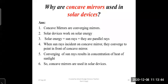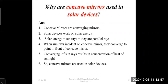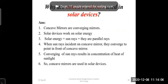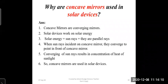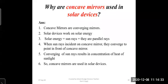Why are concave mirrors used in solar devices? Concave mirrors are converging mirrors. Solar devices work on solar energy, which means sun rays that are parallel to the principal axis. When sun rays fall on a concave mirror, they converge to a point in front of the mirror. This convergence of sun rays results in the formation of a large amount of heat. Maximum heat is produced and the purpose of the solar device is fulfilled. Therefore, concave mirrors are used in solar devices.